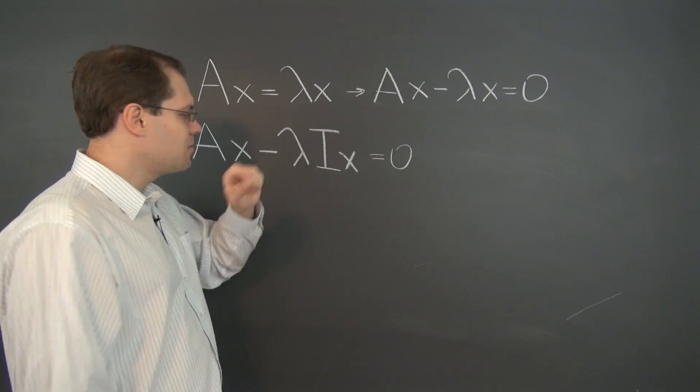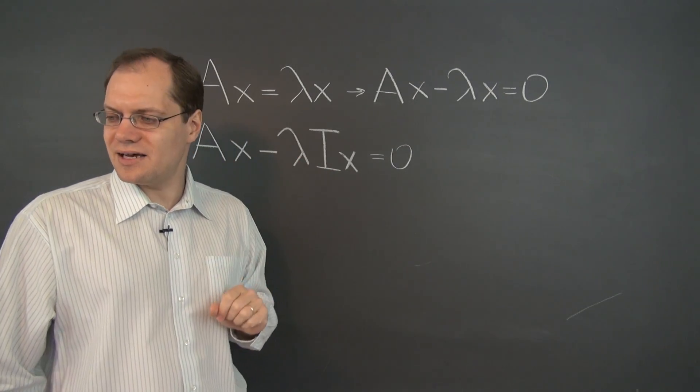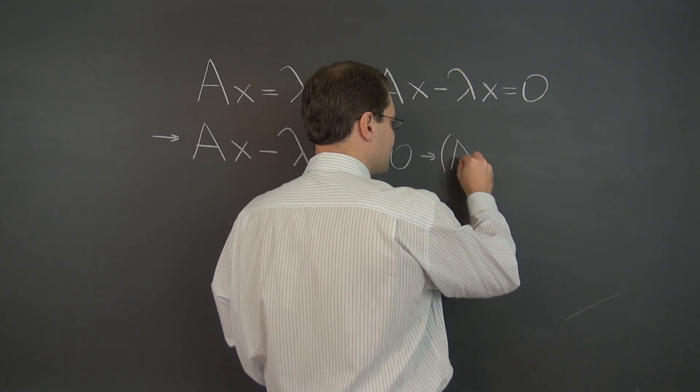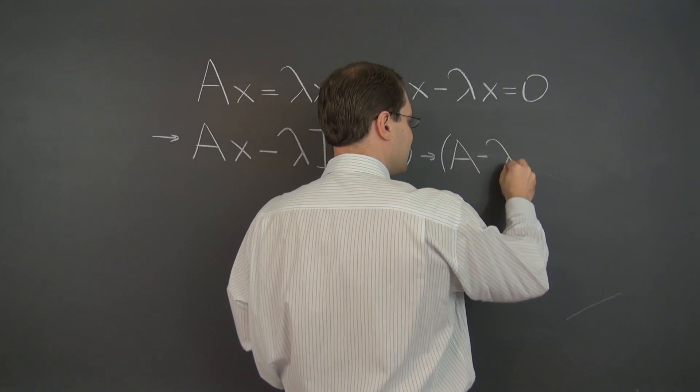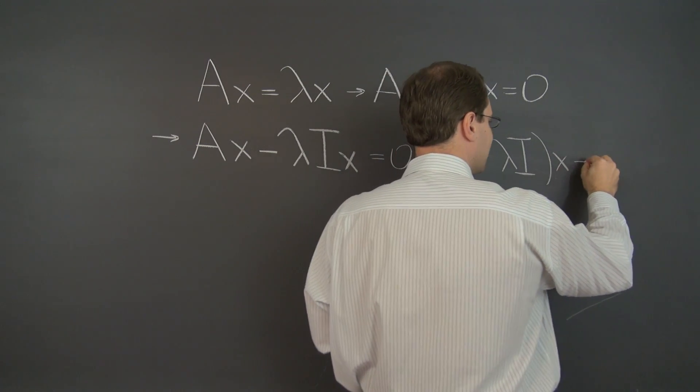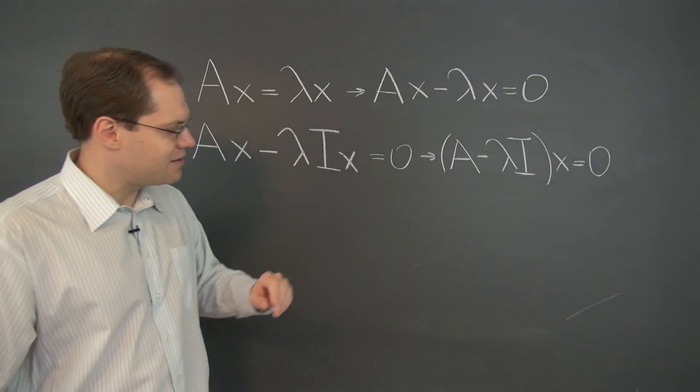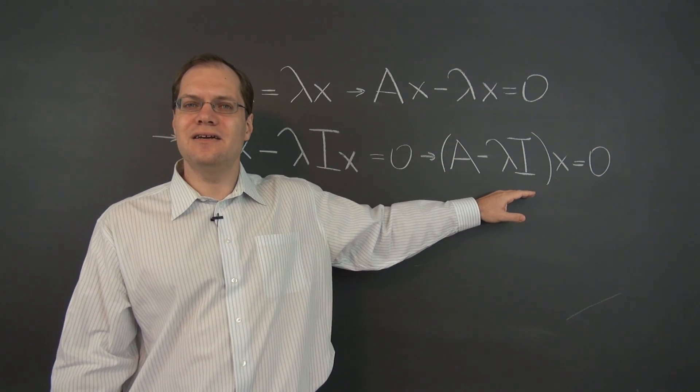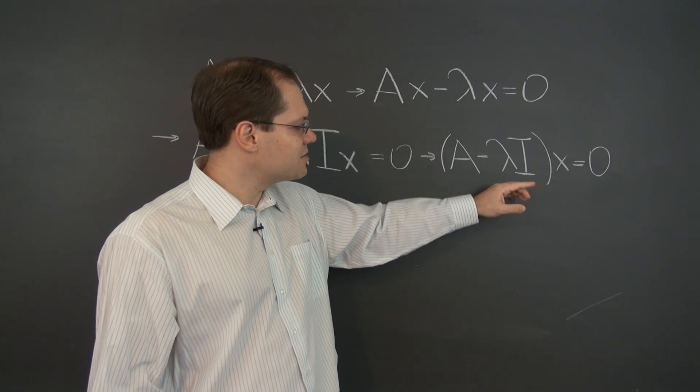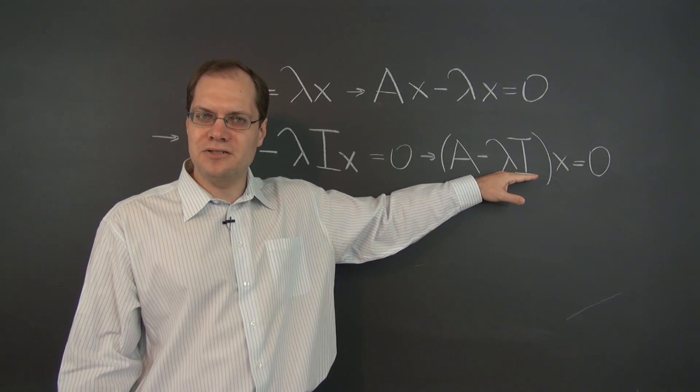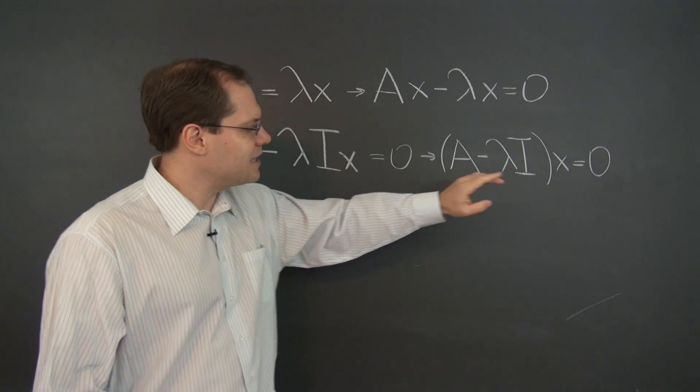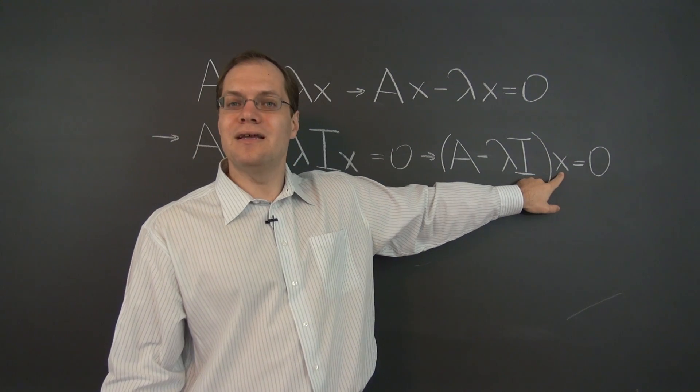And I believe I still have space, so what we'll have inside is (A - λI)x = 0. So now we have a linear system-ish, kind of. It's not quite a linear system because this is not a constant matrix - it still has λ sitting in it. But in any case, with respect to x, it is a linear system.